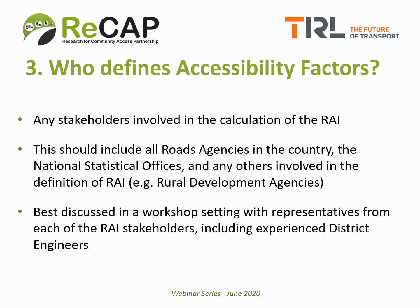So who should define the accessibility factors for a given RAI calculation exercise? Any stakeholders involved in the calculation of the RAI can be involved in defining the accessibility factors. These stakeholders should include all roads agencies in the country, the national statistical office or offices, and any others involved in the definition of RAI, for example rural development agencies. Liaison with local staff who are familiar with the rural road networks is essential. The best way to gain agreement on accessibility factors is to discuss them in a workshop setting with representatives from each of the RAI stakeholders, including experienced district engineers.